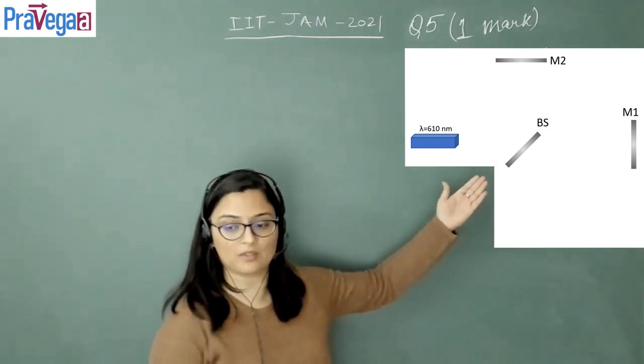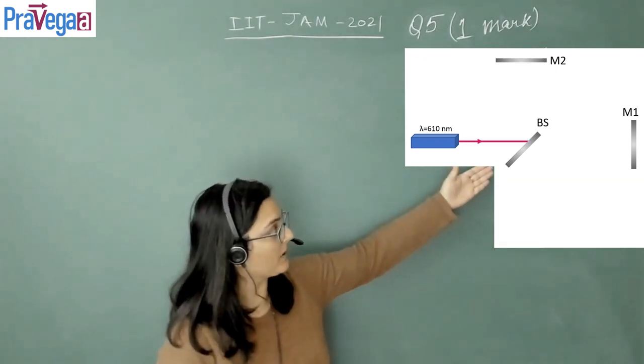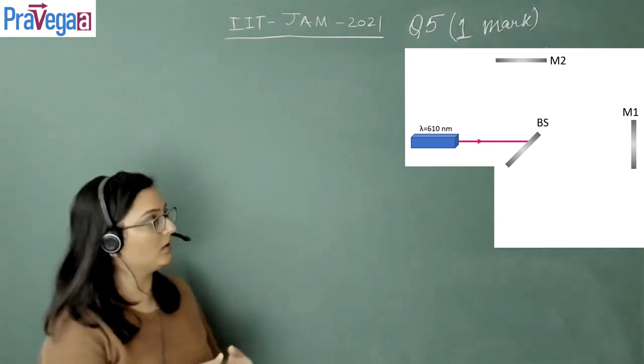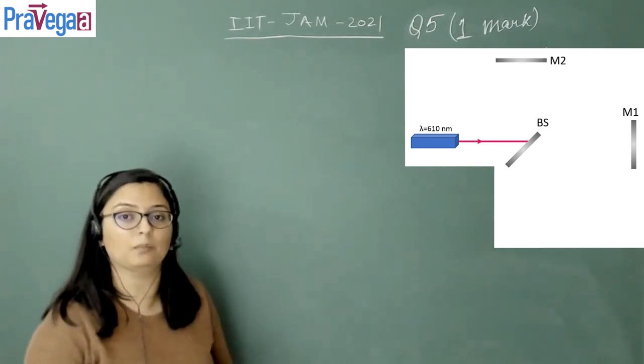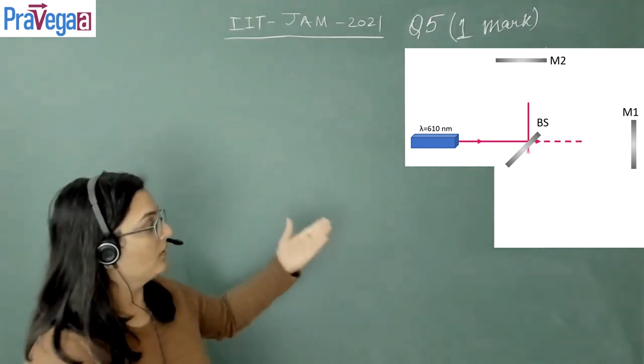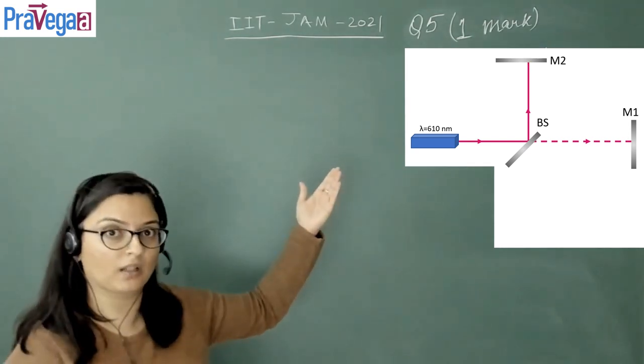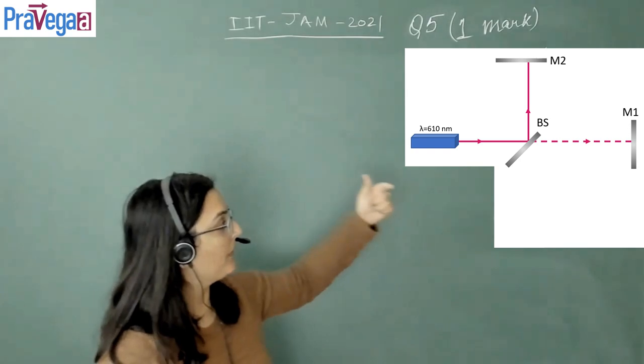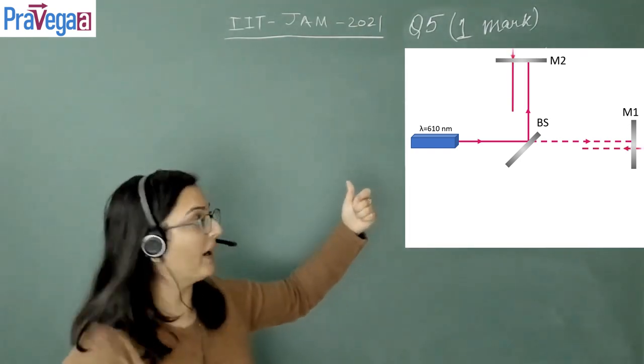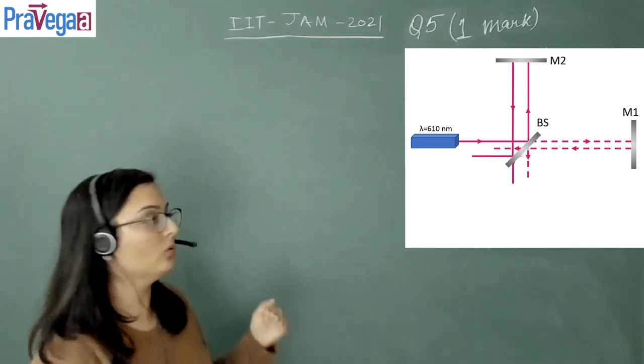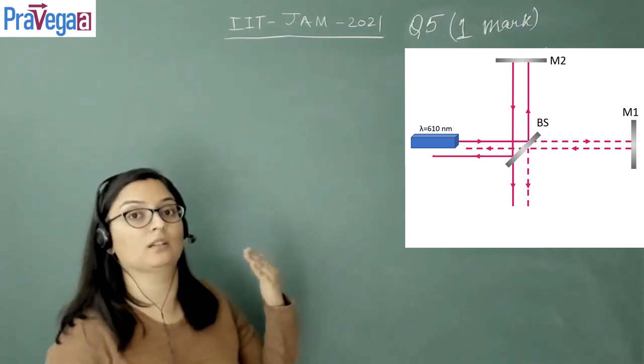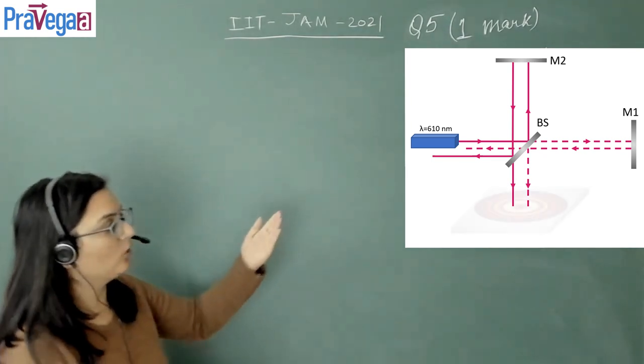So what actually is a Michelson interferometer? The laser comes over here and passes through the beam splitter. The beam splitter, as the name suggests, splits the beam into two parts - one goes to mirror M1, the other goes to mirror M2. When they are reflected back from mirrors M1 and M2, this beam splitter recombines both beams to produce some interference pattern.